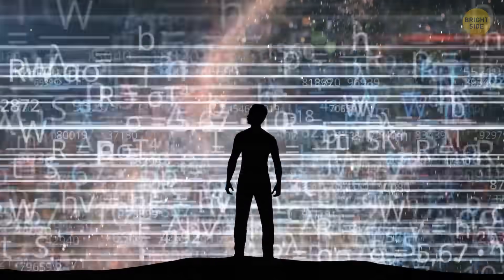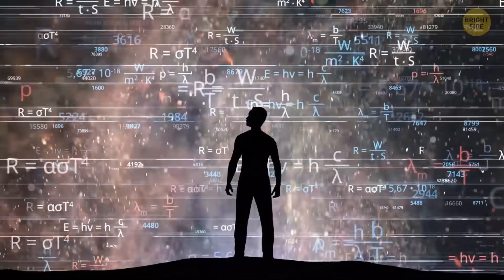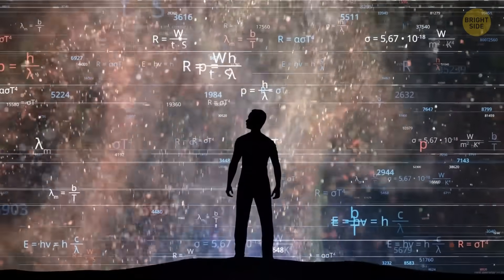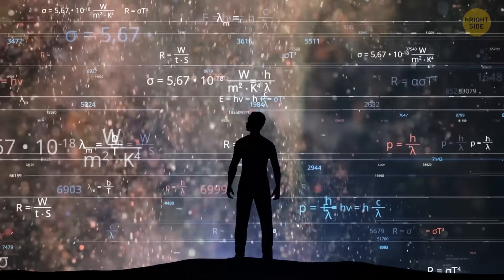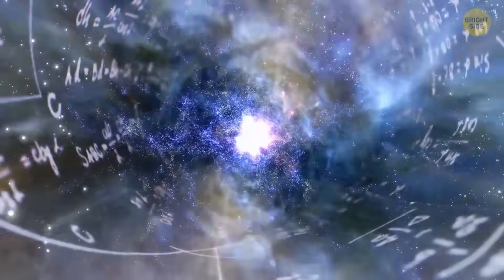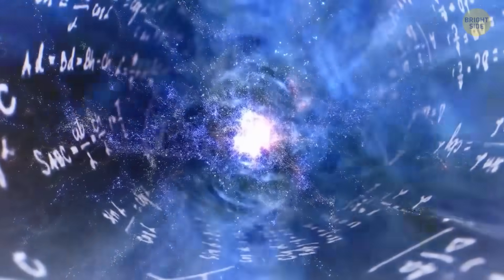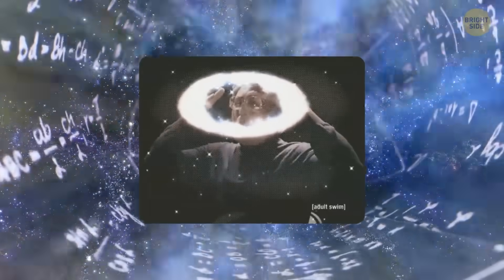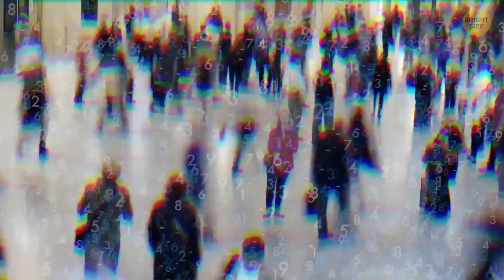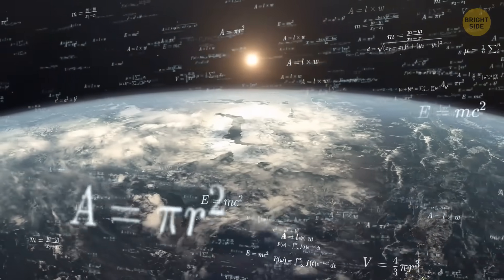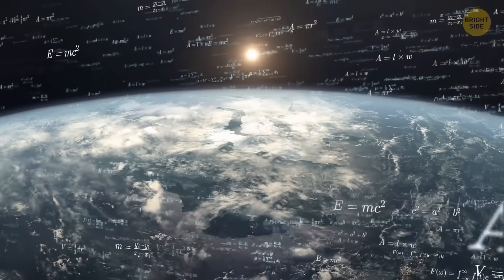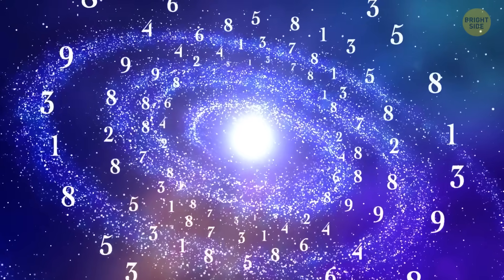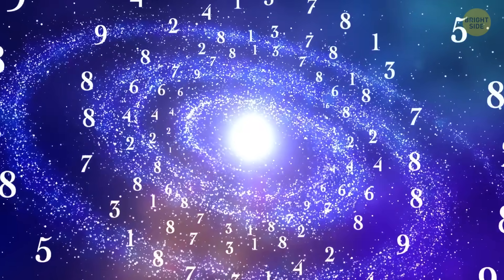And level four is the ultimate ensemble. This level gets super abstract. It says that everything, every possible universe or reality, can be described using math. I wish now I hadn't fallen asleep in algebra. Imagine all the different math equations describing every conceivable way the universe could be. This level says that every math equation that can describe a universe actually exists, and they're all real in their own way.